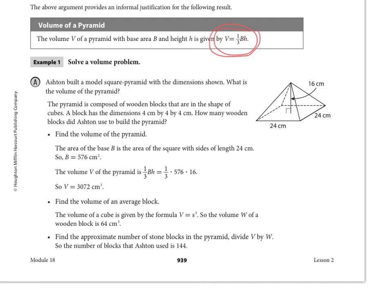Now we want to find the volume of just one of the little blocks that is making up this pyramid, and so we have cubes that are 4 by 4 by 4, and so that wooden block is 64 cubic centimeters. So we're just going to divide the volume by the value of the volume of one block, and so we're taking 3072 and dividing that by 64, and we get that the number of blocks used is 144.